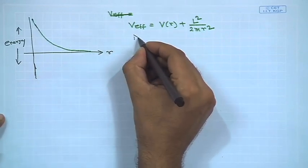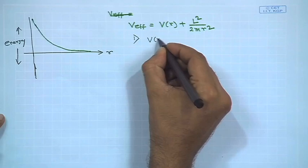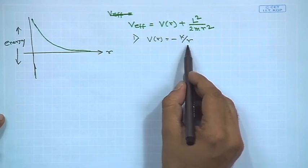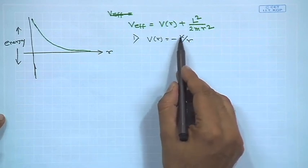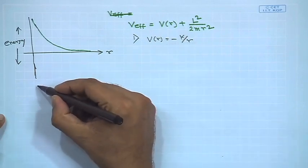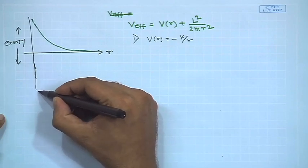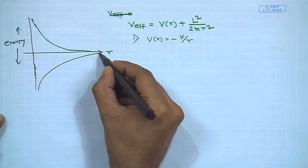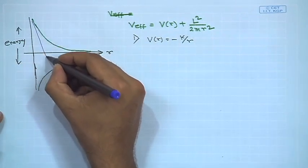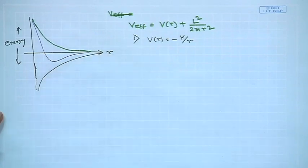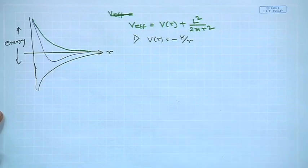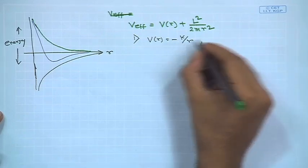Case one: V(r) = −k/r. This is an attractive inverse square force law, meaning the force goes as k/r², and the potential is −k/r. This potential looks like a curve in the negative region, and overall the effective potential, combining V(r) and the centrifugal term, has a characteristic well shape as we have discussed.